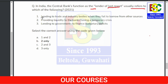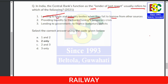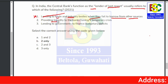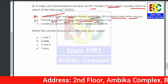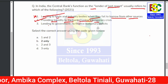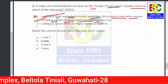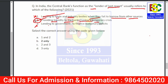Next question: In India, the central bank functioning as 'lender of last resort' refers to which of the following? Option 1 — lending to trade and industry when they fail to borrow from other sources — incorrect. Option 2 — providing liquidity to banks having a temporary crisis — correct. Option 3 — lending to the government to finance budgetary deficits — incorrect. Only point number two is correct.